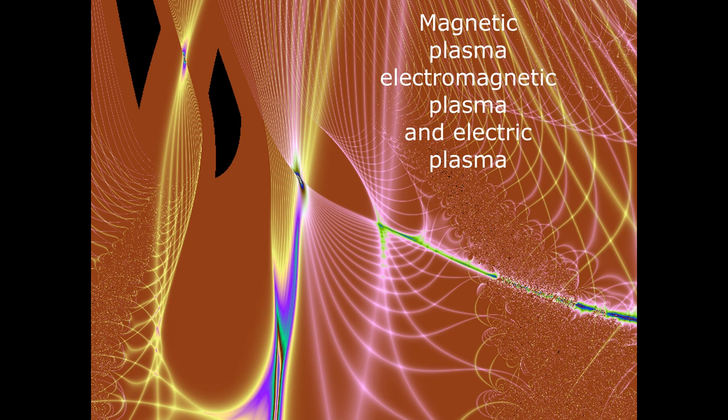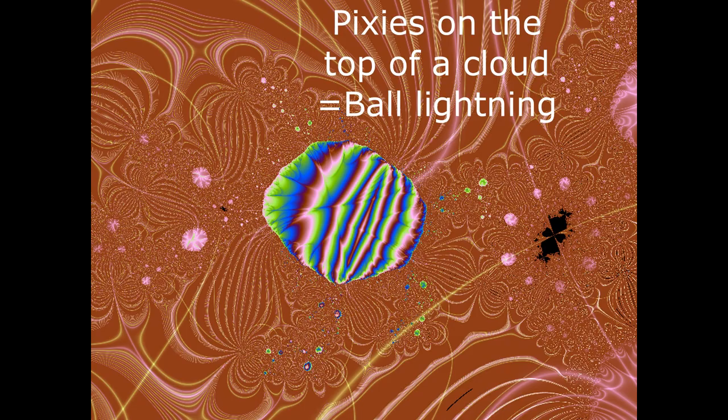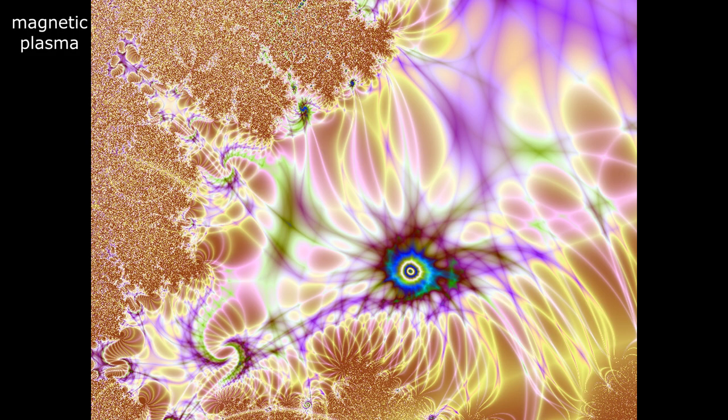Plasma can have different shapes. There are three types of plasma: electric, magnetic, and electromagnetic plasma. Electric plasma also exists in cellular form, like on the top of clouds — these are called pixies. Magnetic plasma can have spiral shapes.